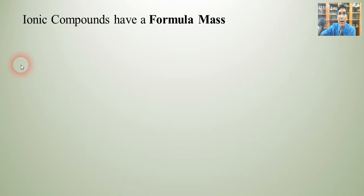When we have ionic compounds, these are compounds that are made up of a metal and a non-metal or a cation and an anion, we're going to find that those have what we call a formula mass. We're going to calculate the formula mass.